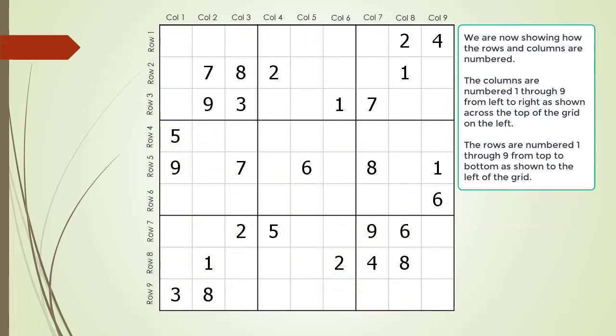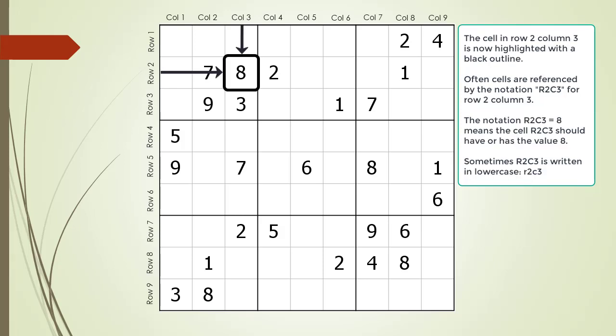The columns are numbered 1 through 9 from left to right, and the rows are numbered 1 through 9 from top to bottom. Cells can be referenced by row and column number. For example, the cell 2,3 is highlighted with a black box — it contains an 8 as a given. This stands for row 2, column 3. Often cells are referenced by the notation R2C3 for row 2, column 3. The notation R2C3 equals 8 is used to say a cell has a value of 8. Sometimes the notation R2C3 is written in lower case.